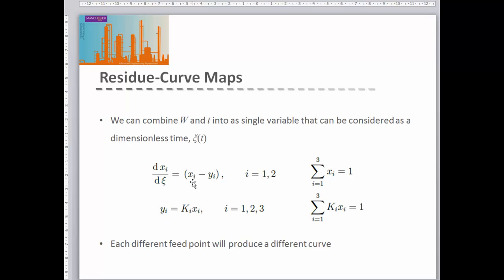We know our liquid phase composition at our start time, as it's our initial liquid given in the question. What we need to do first is calculate the vapor phase fraction in equilibrium with that liquid phase. We know the vapor phase fraction is linked to our liquid phase fraction through Raoult's law, and of course the fractions of each component in the vapor phase must sum to one.